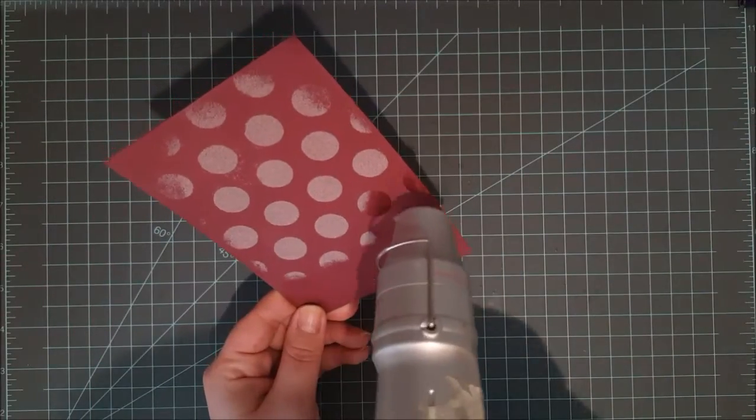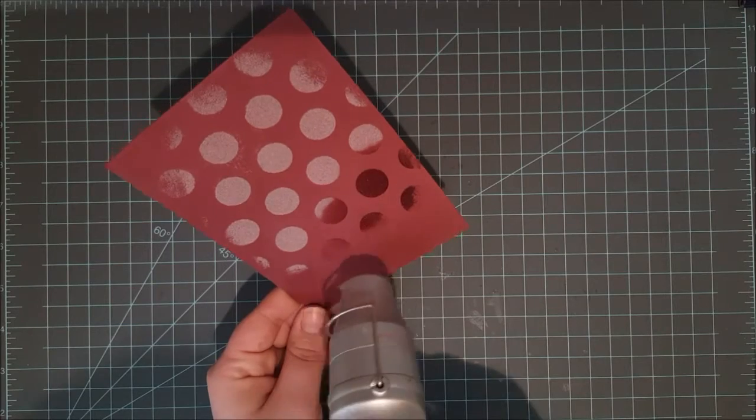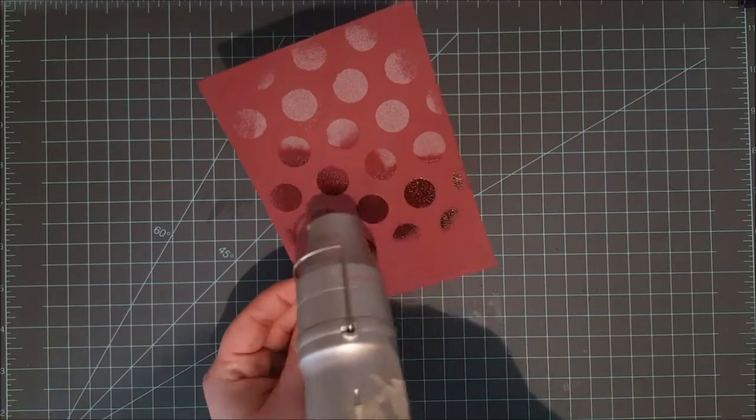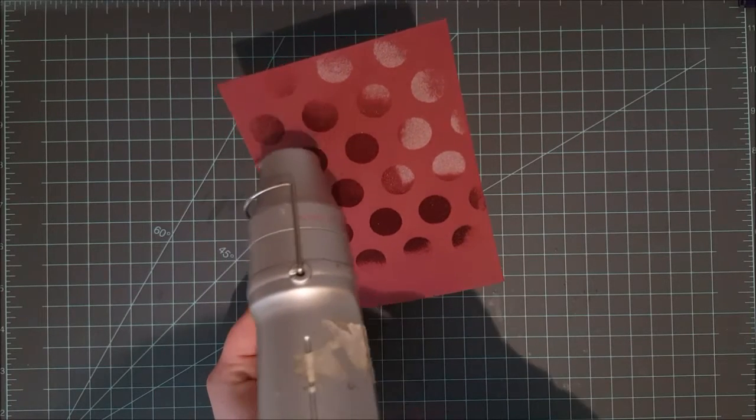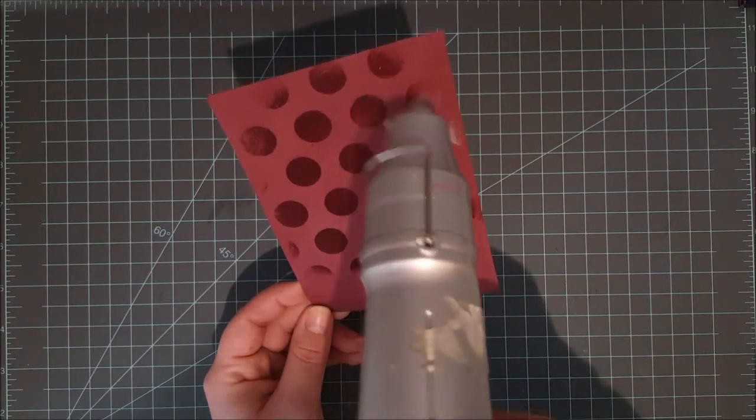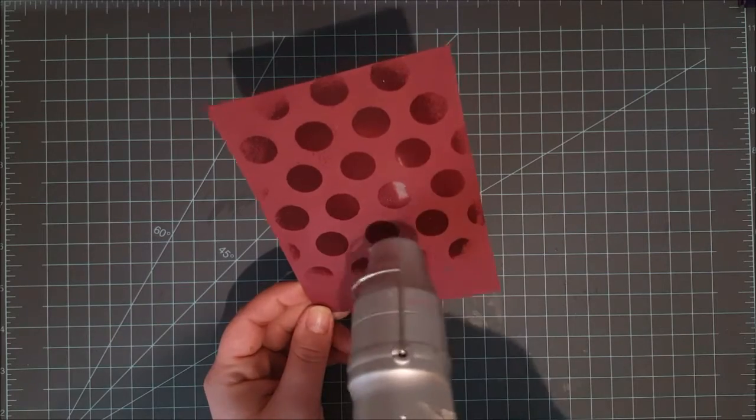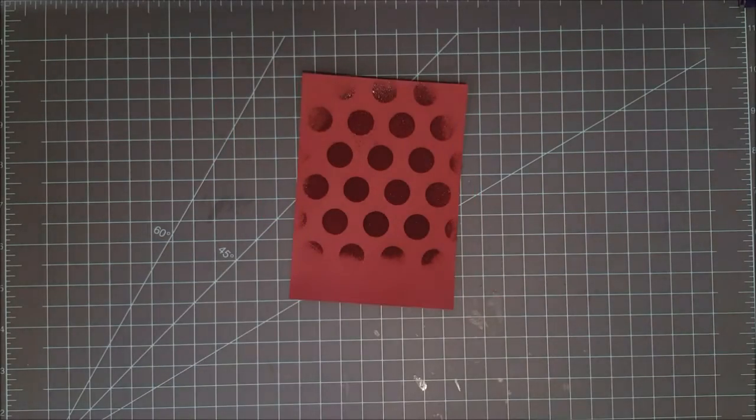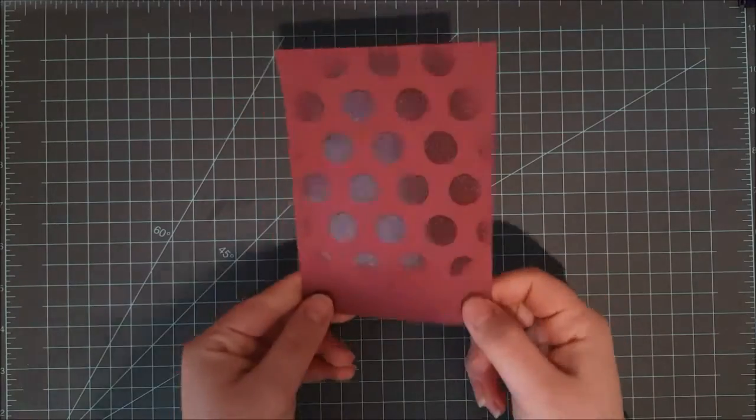Once I've got it the way I want it I'm going to take my heat tool and heat set all of this. You want to make sure that you get this nice and melted. You want it all to be nice and shiny because anything that's not is not going to have the foil stick to it. Make sure it's nice and heat set onto your paper. And there you can see mine's ready to go.